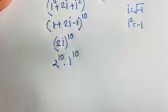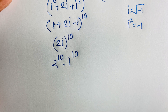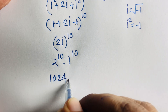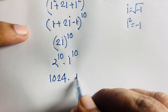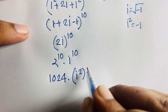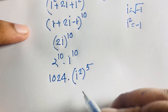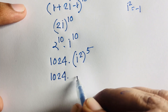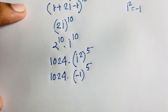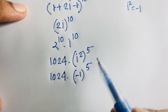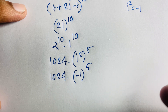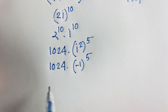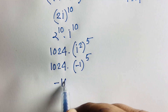Now, 2^10 = 1024. For i^10, I rewrite it as (i^2)^5 since 2 times 5 is 10. Then i^2 = -1, so (-1)^5 = -1 because 5 is an odd number. Therefore our final answer is -1024.